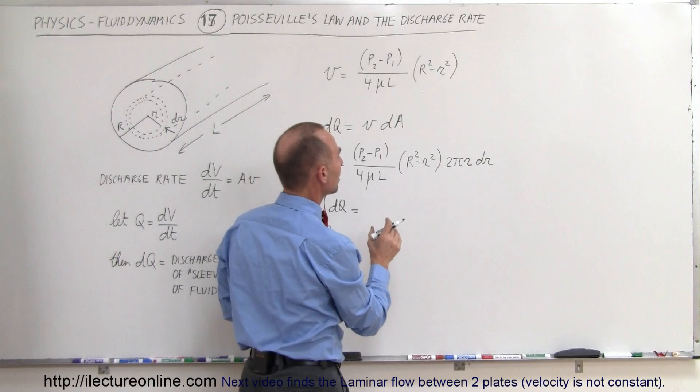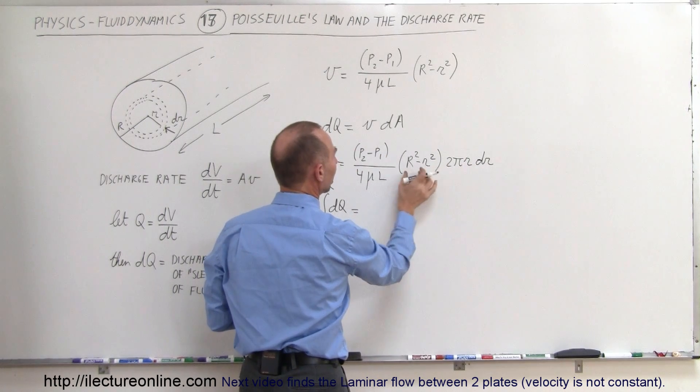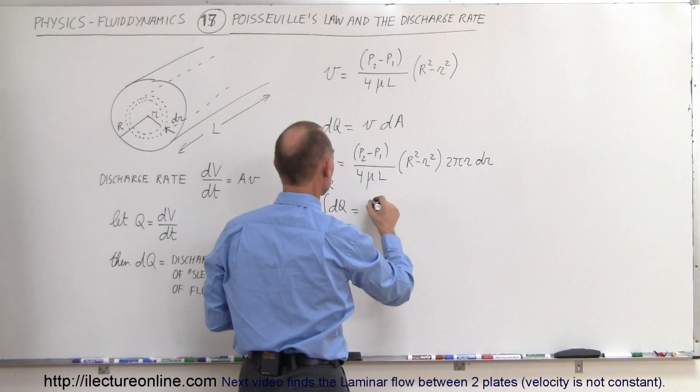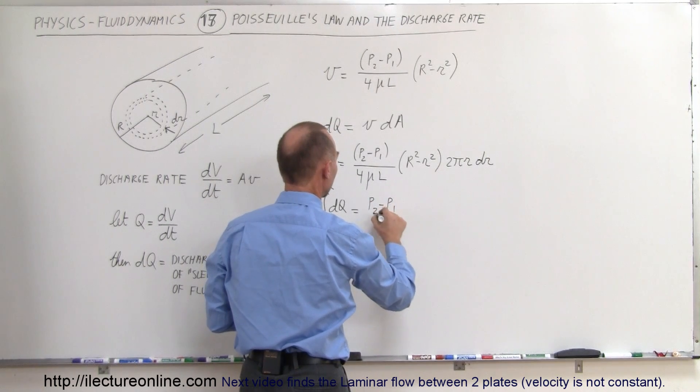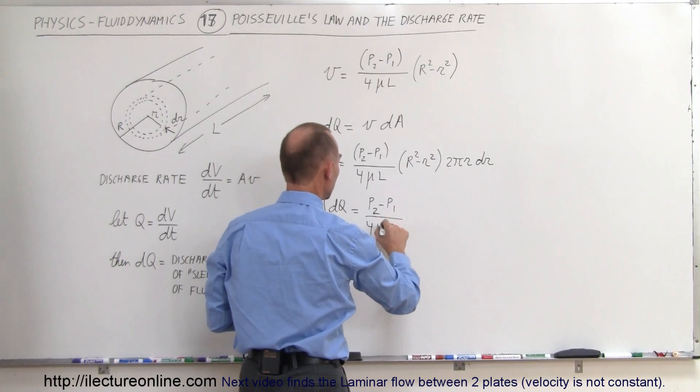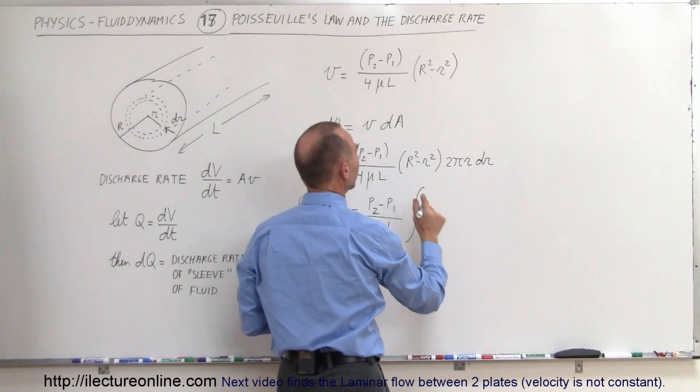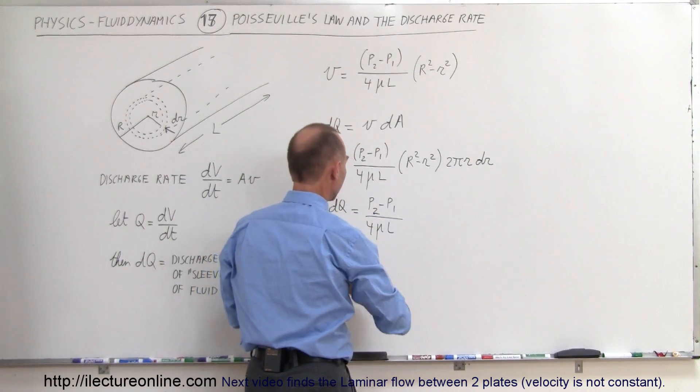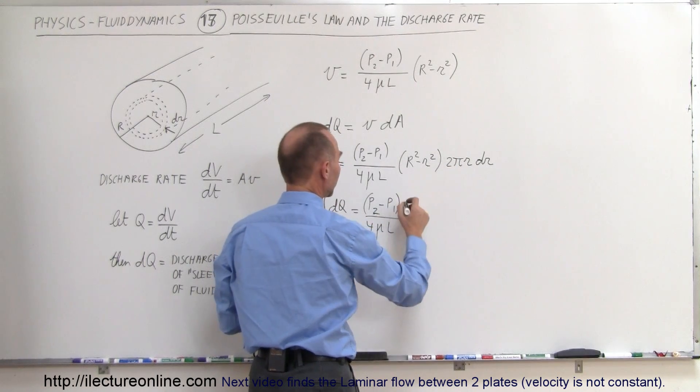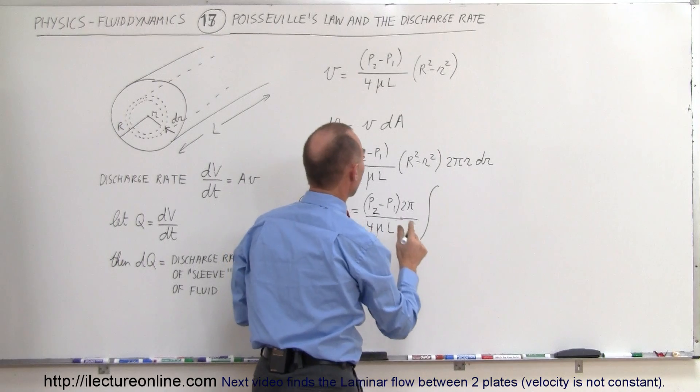Now let's see, what is a constant here? Notice that this whole thing is a constant, and then this multiplied times that, so let's go ahead and do that. So we have p2 minus p1, divided by 4 mu L, all that is a constant. Now we're going to integrate, and we multiply this through, we also have a 2 pi here. Can't forget about the 2 pi. So let's bring the 2 pi over here.